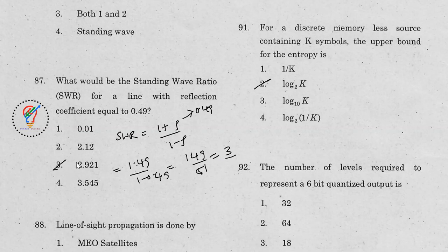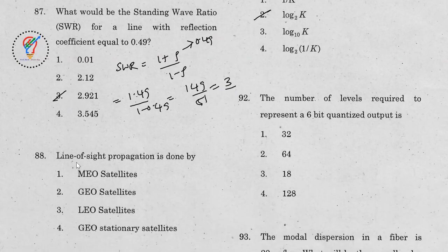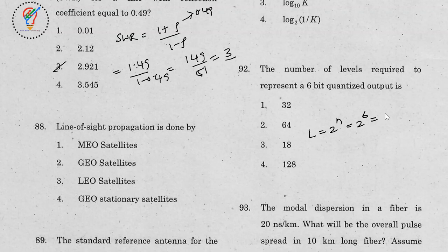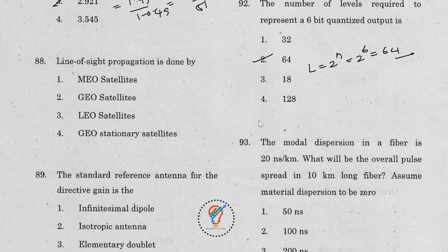1.49 / 0.51 ≈ 2.921, so the answer is approximately 2.921. Question 93: The number of levels required to represent a 6-bit quantized output is 2⁶ = 64 levels — option 2 is the right answer.